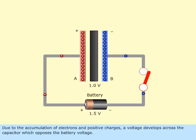Due to the accumulation of electrons and positive charges, a voltage develops across the capacitor which opposes the battery voltage.